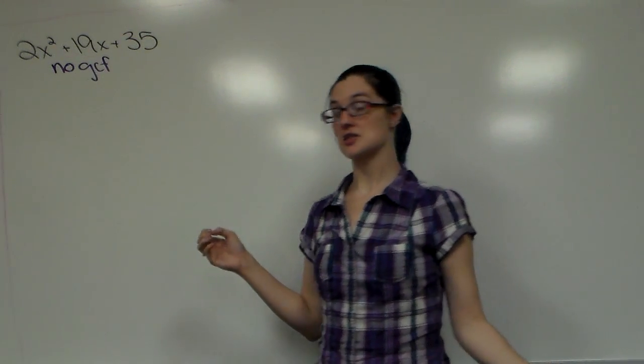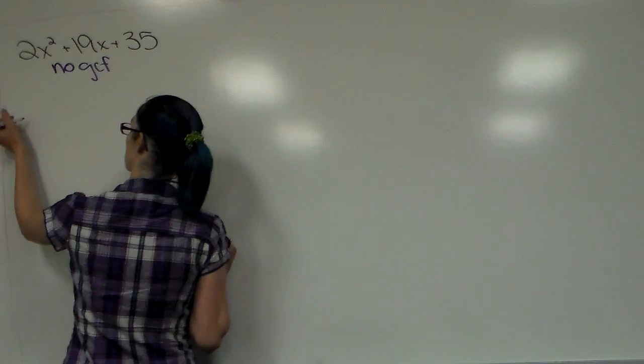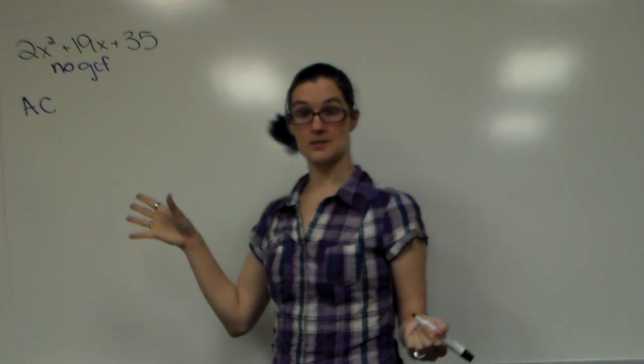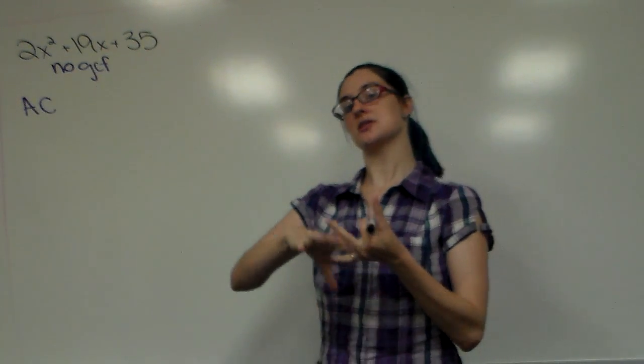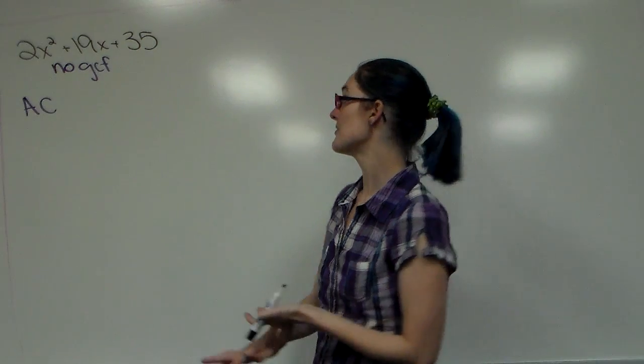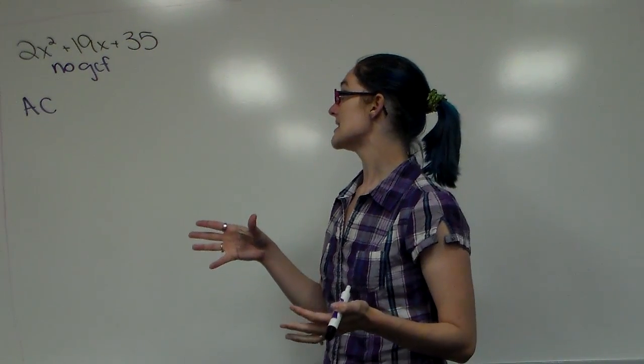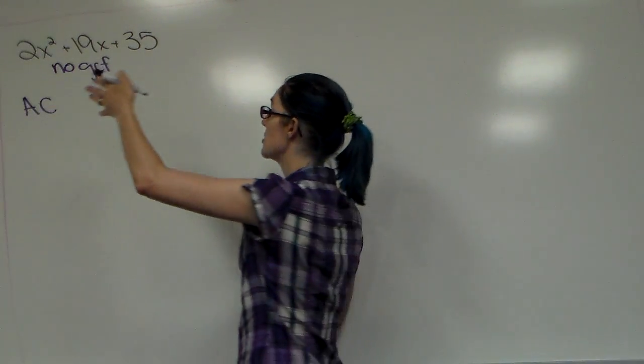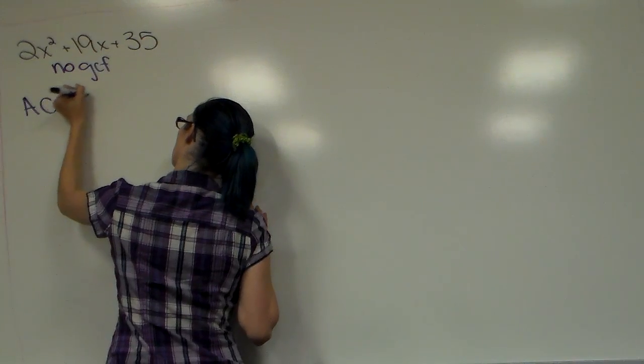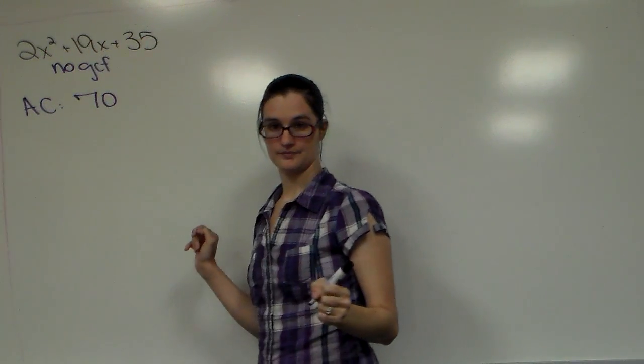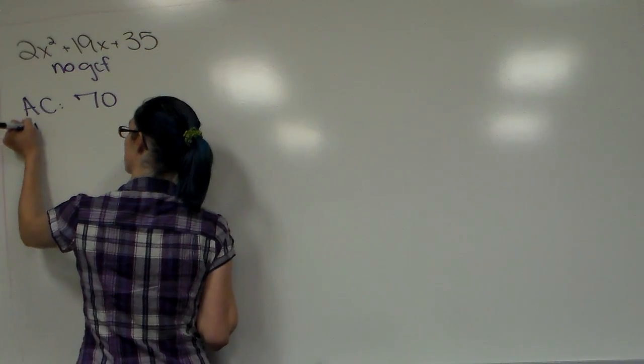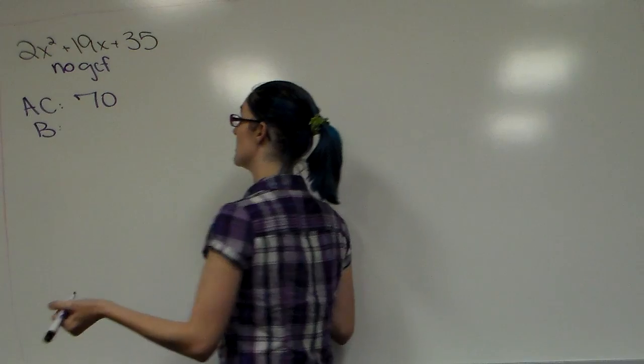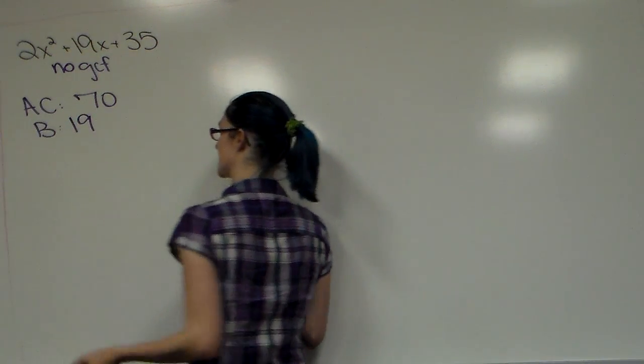Always make a note of it so you won't forget to check it. The first thing we're going to do is say what is A times C. Make sure when you're doing AC it has to be in order: x² must come first, the x must come second, the constant number all by itself with no variable must come last. AC, you're going to multiply the first coefficient by the last coefficient, numbers only. 2 times 35 is 70. Then identify what B is as well. B is your middle, that is your 19.